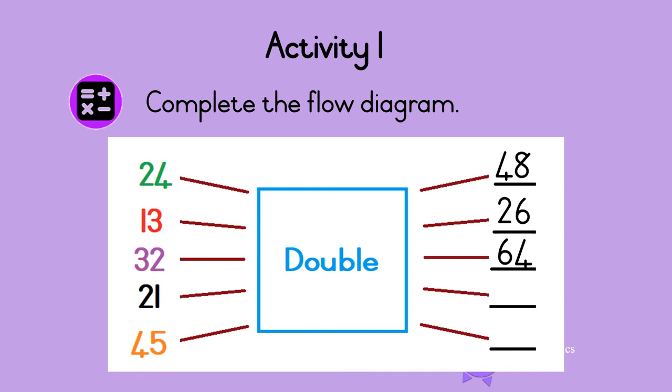Are you ready? Double 2 is 4. And double 1 is 2. So double 21 is 42. Well done!